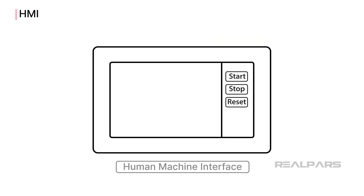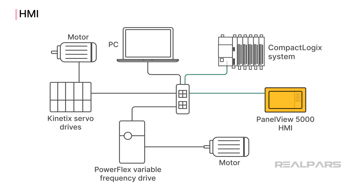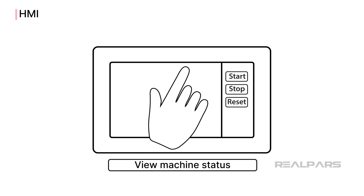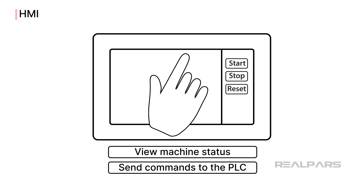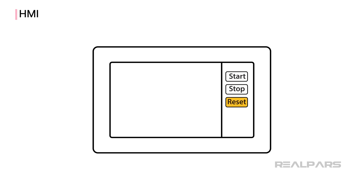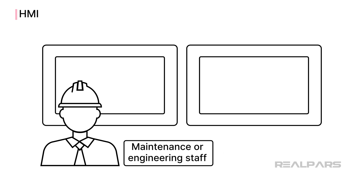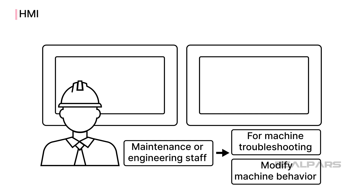The machine is equipped with a human-machine interface, also known as an HMI. In this case, a PanelView 5000 HMI is used and communicates with the PLC over an EtherNet/IP network. This device is a touchscreen terminal that lets an operator see the status of the machine and send commands to the PLC. Some common commands may be RESET to reset a fault, START to start running the machine, and STOP to stop the machine. An HMI may also have additional screens that are only accessible by maintenance or engineering staff, that are used to troubleshoot or modify the behavior of the machine.